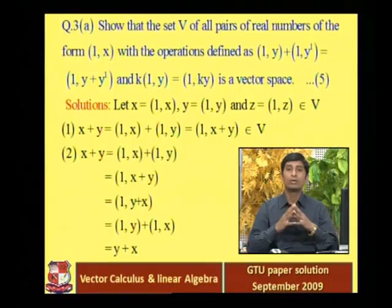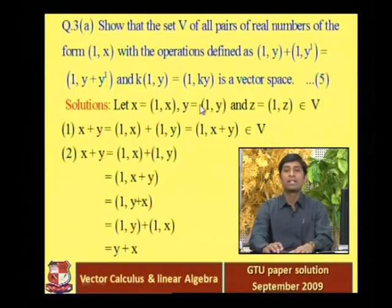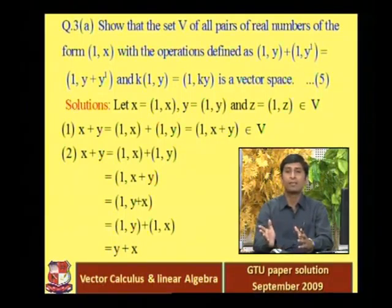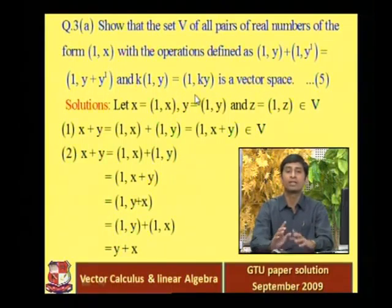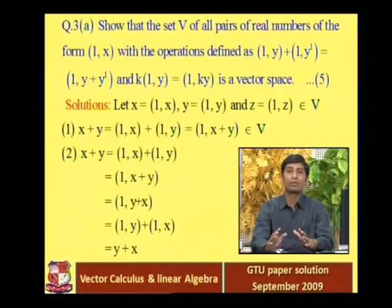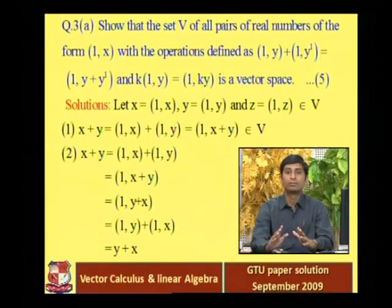To prove the given set is a vector space, we cannot use normal addition and scalar multiplication. We must use the defined operations: (1, y) + (1, y') = (1, y + y') and k·(1, y) = (1, ky). The set consists of ordered pairs, and we need to verify all axioms using these custom operations.